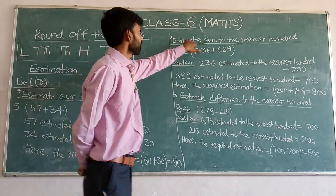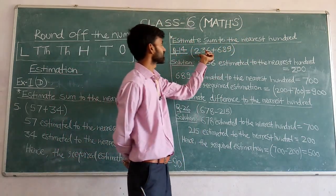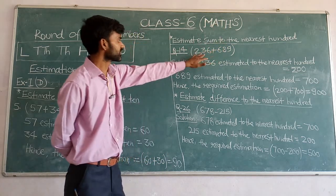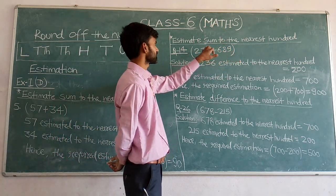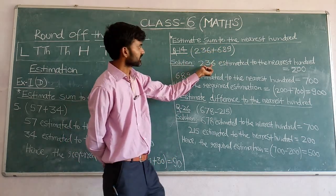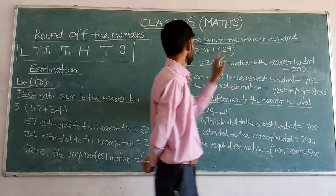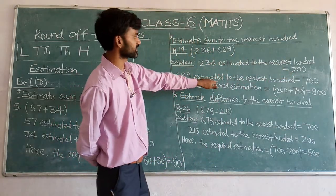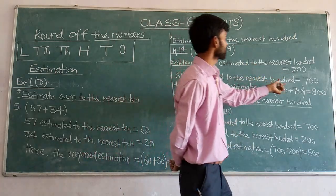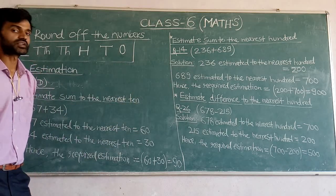If we have to estimate the sum to the nearest 100, for question number 14, we have 236 plus 689. First, find the estimated rounded values of these two numbers. 236 estimated to the nearest 100 is 200, and 689 estimated to the nearest 100 is 700. So the required sum is 200 plus 700, which equals 900. 900 is the estimated sum to the nearest 100.